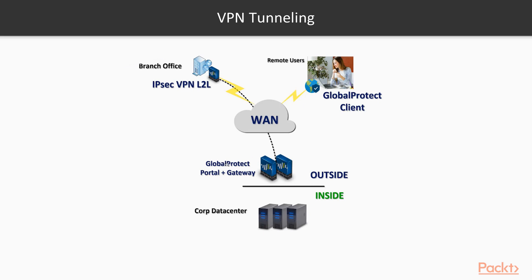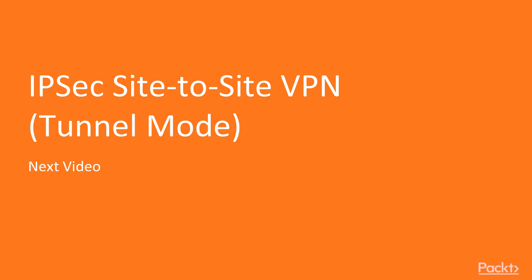After connecting, this is treated like any other zone, so you can put policies on the Global Protect zone or VPN zone, and users will have access to the resources they're allowed to. This section covers those two connectivity options: implementing IPsec site-to-site VPNs, and enabling remote access VPN with Global Protect. In our next video, we're going to discuss IPsec site-to-site VPNs in tunnel mode. Thank you for watching.